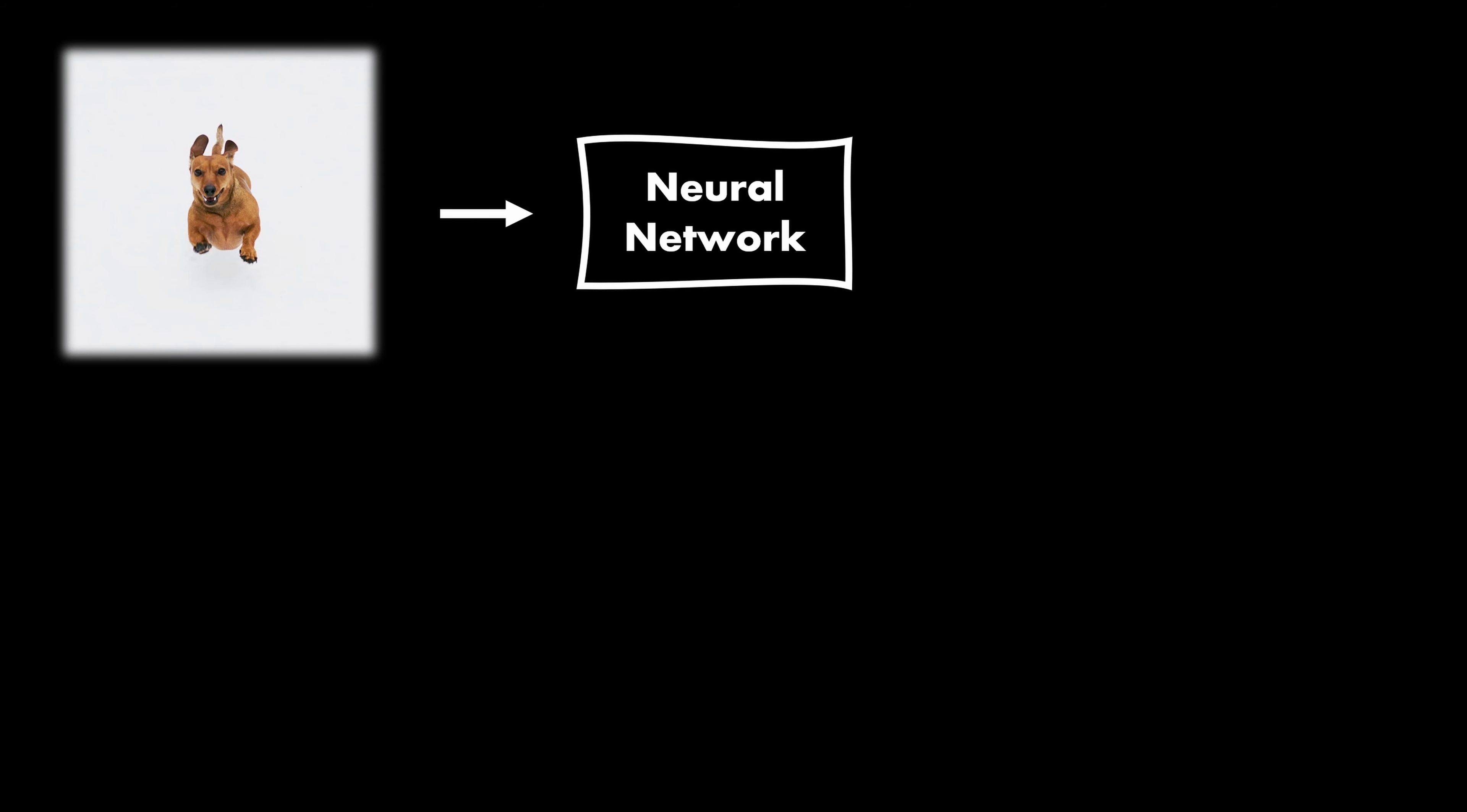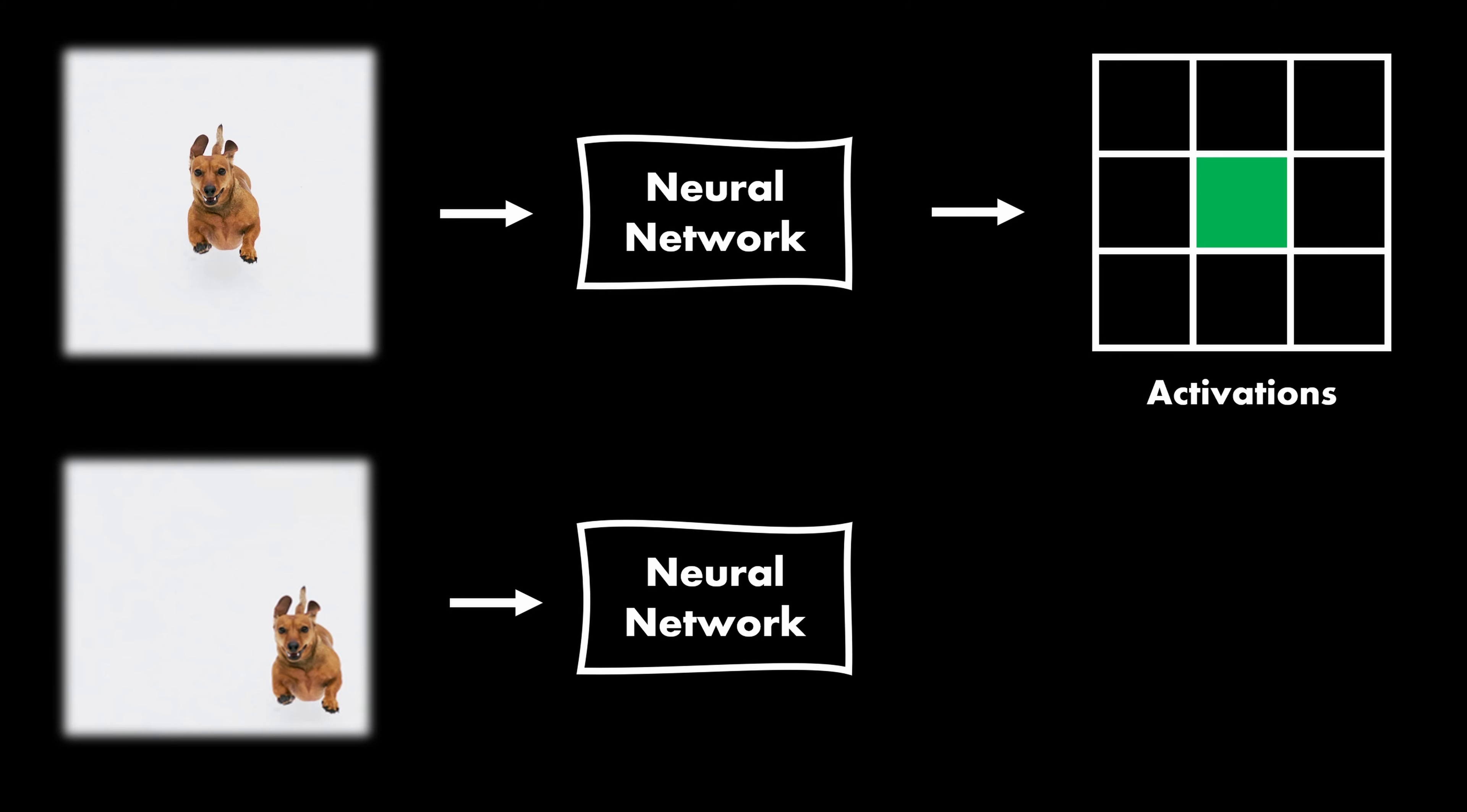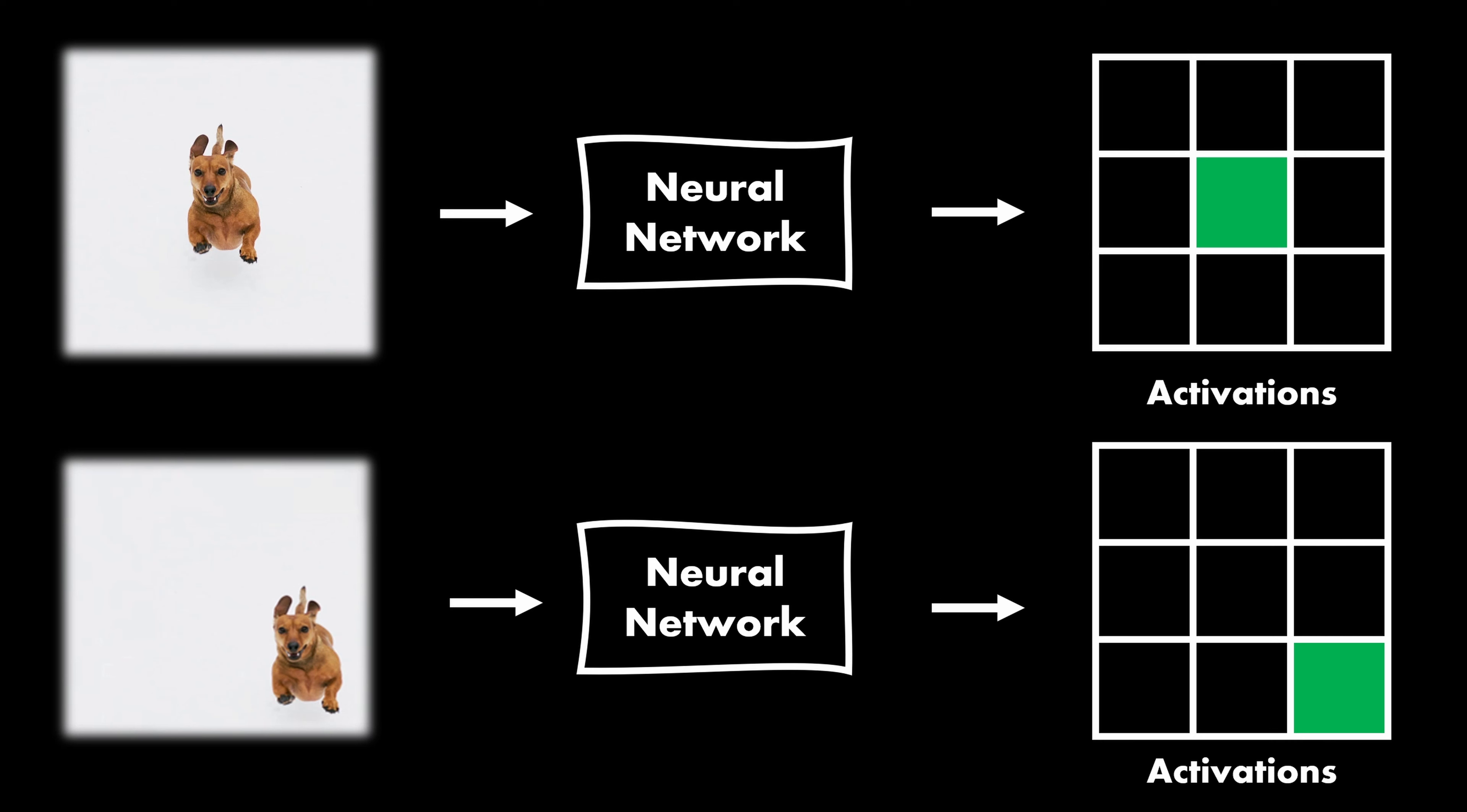I want to start with some intuition about equivariance, in case you have never come across this term. A desirable property for a neural network is that no matter where some pattern of interest occurs in our data, the model is able to detect it. For example, we pass this dog image through the model and get high activations for the area where the dog is. Now, the model should also respond similarly if the dog occurs somewhere else in the image. In other words, the model should be insensitive to certain transformations of the objects.